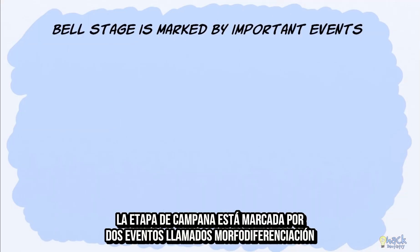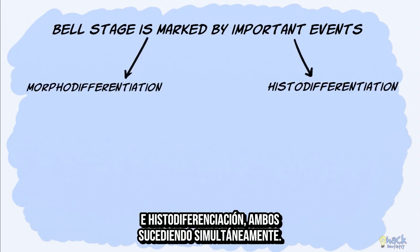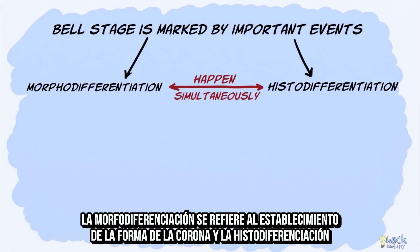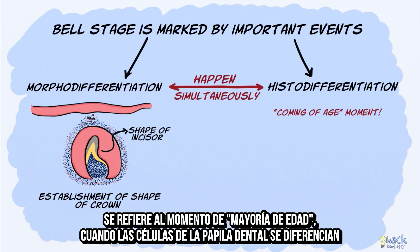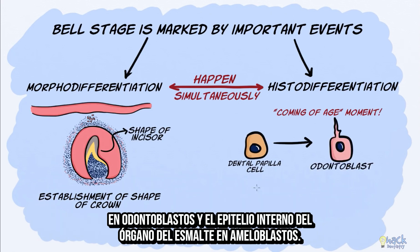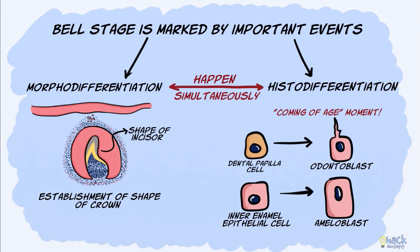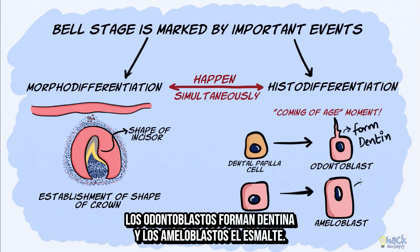The bell stage is marked by two events called morpho-differentiation and histo-differentiation, both happening simultaneously. Morpho-differentiation refers to the establishment of the shape of the crown, and histo-differentiation refers to the coming-of-age moment when the dental papilla cells differentiate to become odontoblasts and the inner enamel epithelial cells become ameloblasts. Odontoblasts form dentine and ameloblasts form enamel.